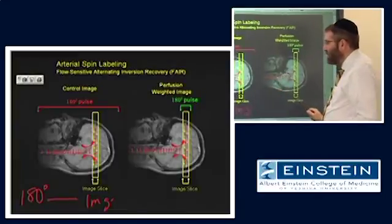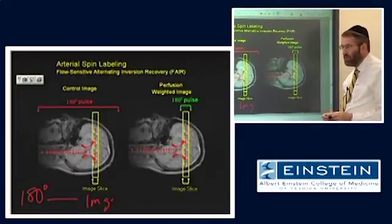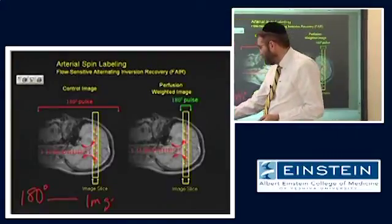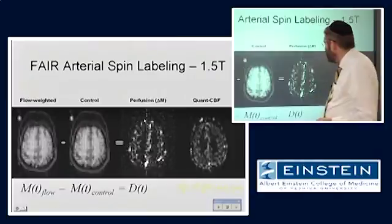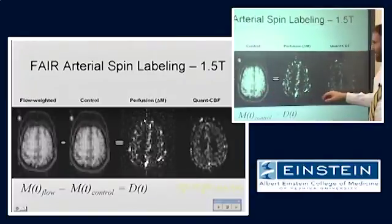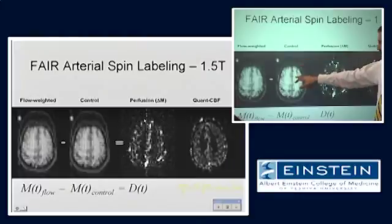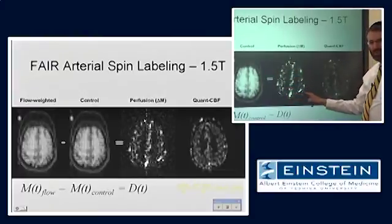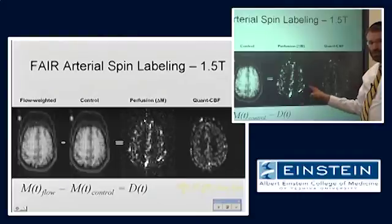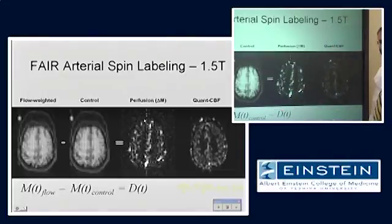If we compare these two images by subtracting them, we can have an image where we eliminate the stationary spins and all we have left is flow or we have a flow sensitive image. So if you look just at the images for a second, on the left hand side is the flow sensitive image, on the right hand side next is the control image, and this is the difference image. So the signal, as little signal as there is, in this image is due to flow. This is signal only from those uninverted spins that entered the slice. And this is a simple subtraction. The flow weighted image minus the control image gives us this perfusion weighted image.